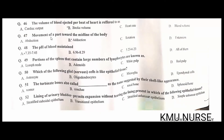Movement of a part toward the midline of the body is adduction — B is the correct option. The pH of blood is maintained between 7.35 and 7.45 — that is the correct option. The portion of the spleen that contains a large number of lymphocytes is known as the white pulp — C is the correct option.